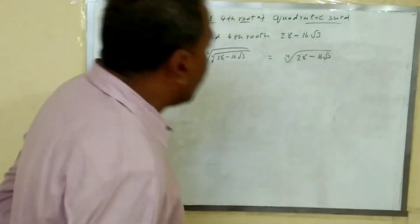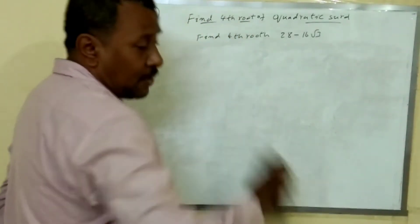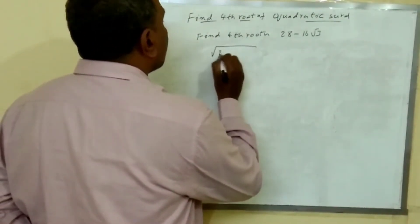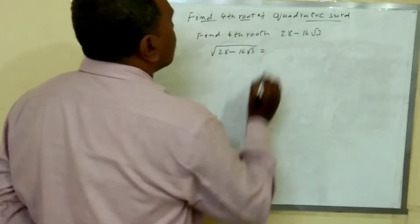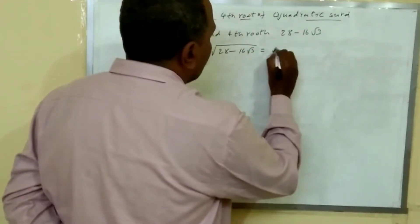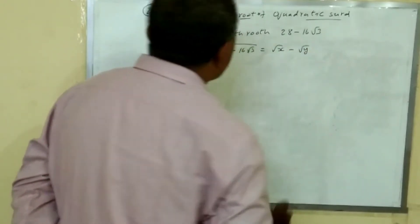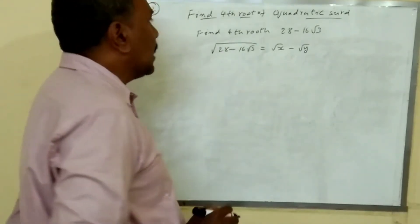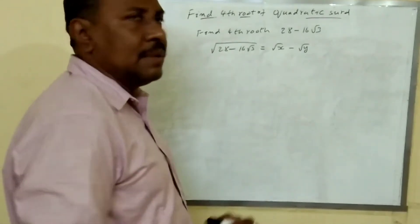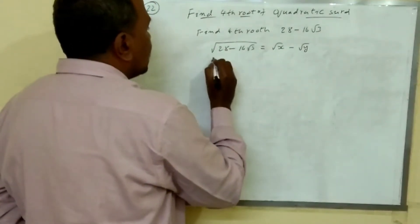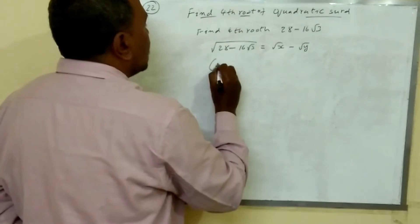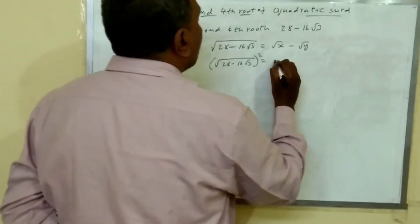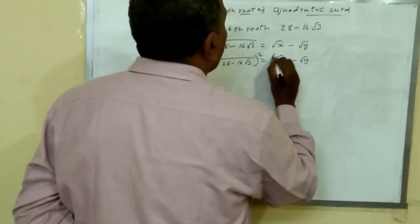So first of all, we take the square root of 28 minus 16 root 3. Let us assume that the square root of 28 minus 16 root 3 is equal to root x minus root y. Squaring on both sides gives 28 minus 16 root 3 squared is equal to root x minus root y squared.